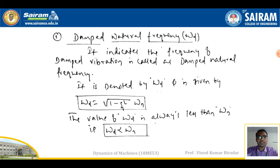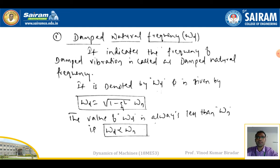We are going to use three terms while solving problems in a damping system. The first term is called damped natural frequency, denoted by ωd (capital omega with suffix d). It indicates the frequency of a damped vibration. This is very important — sometimes they may ask in examination: what do you mean by damped natural frequency?